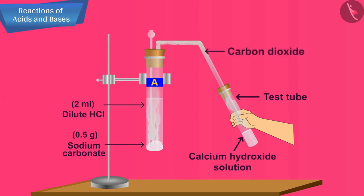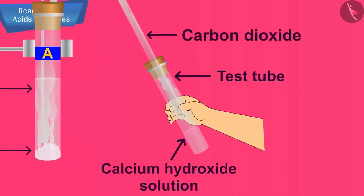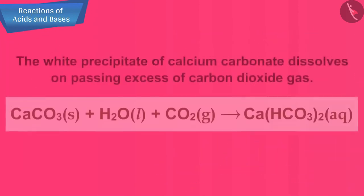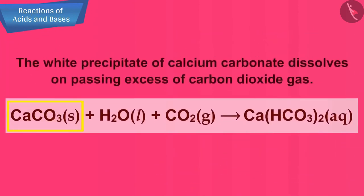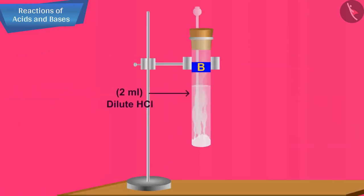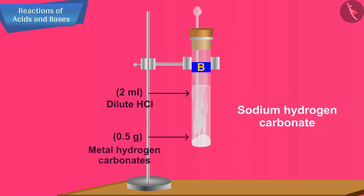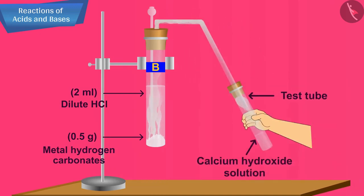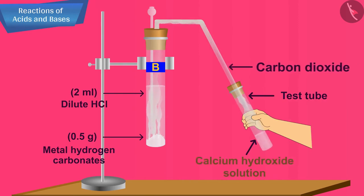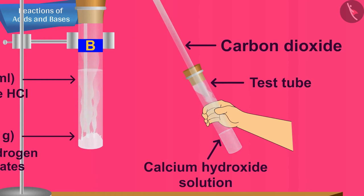Keep on passing the carbon dioxide through the milky lime water for some time. The lime water becomes clear again. This shows that the white precipitate of calcium carbonate dissolves on passing excess of carbon dioxide gas. We can repeat this experiment by replacing metal carbonate with metal hydrogen carbonate, that is sodium hydrogen carbonate. Again, we will get carbon dioxide gas which will turn lime water milky. On passing excess carbon dioxide, the milky lime water will become clear once again.